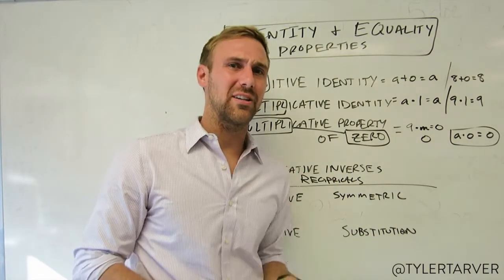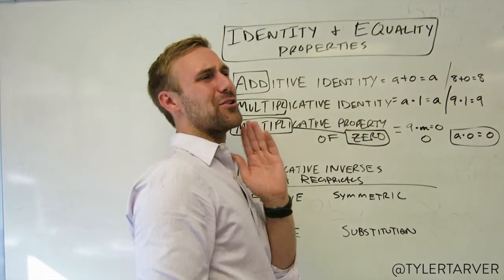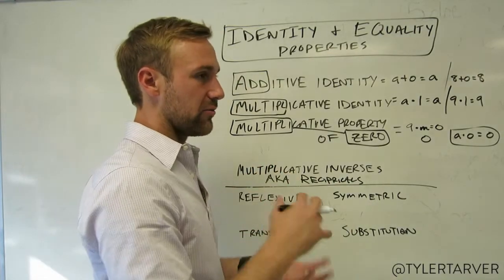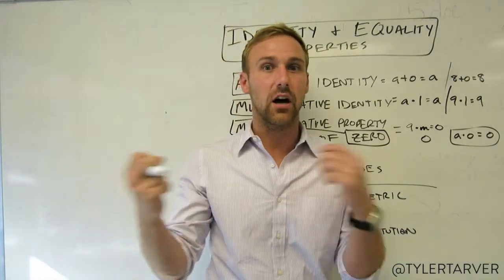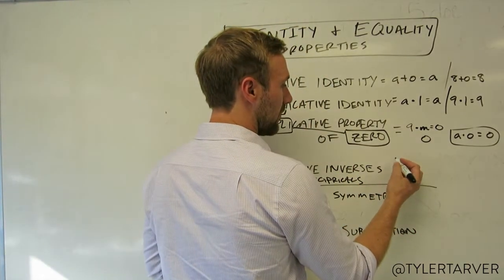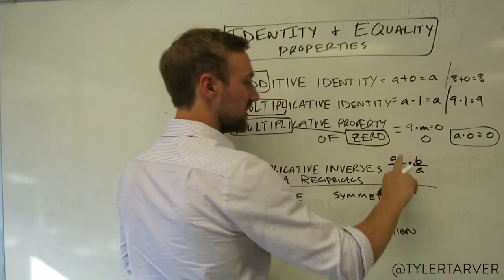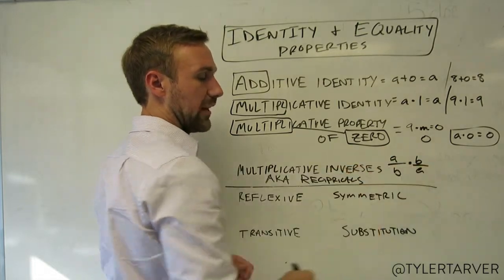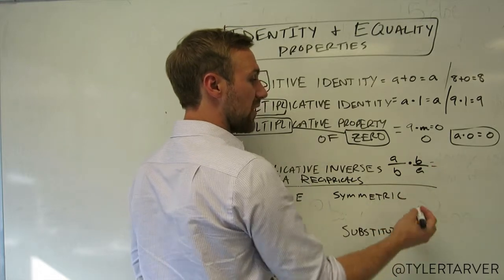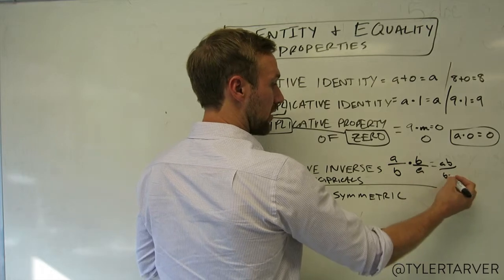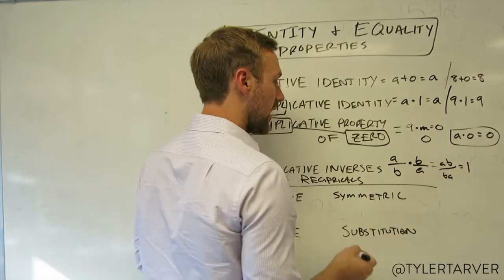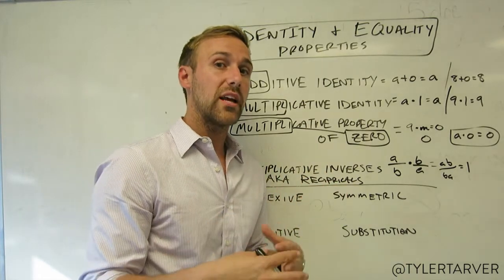Reciprocal means you're flipping it. We want multiplicative inverses to be essentially exact opposites of each other — not negative opposites, but flipped. Here's the formula: a over b times b over a. You flip them, and that makes the multiplicative inverse. When you multiply a/b times b/a, you get a times b over b times a — the same thing divided by itself — which equals one. Multiplicative inverses, aka reciprocals, always multiply to equal one.